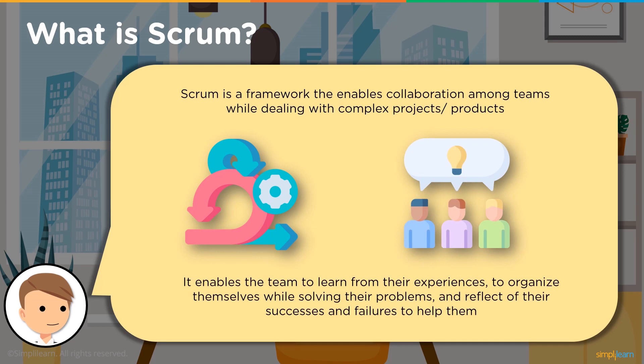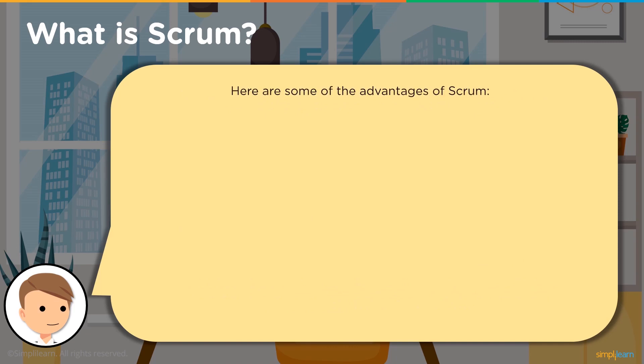Scrum is an extremely popular Agile framework that enables teams to work together while working on a complex project or product. Scrum helps teams to self-organize, learn from their experiences, and reflect on their victories and losses for improvement. Although commonly used in software development, the concept of Scrum can be applied to any kind of team. It's basically a collection of meetings, tools, and roles that help the team structure and manage their work.